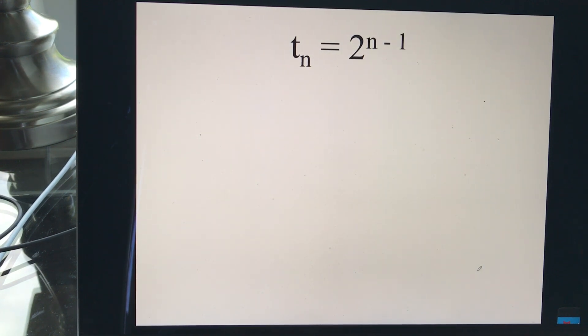A couple others here we could try. t subscript n, we could have an exponent, which is easy. We could say, find the third term. So this would be t subscript 3 would equal 2 to the 3 minus 1. 3 minus 1 is 2. 2 squared is 4. So we could just plug it in.